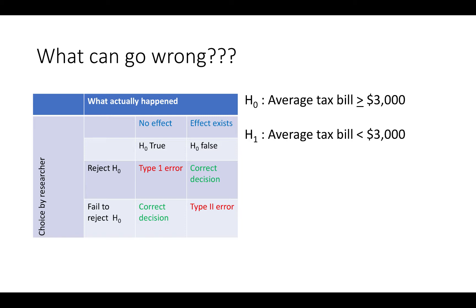We're going to take a look at a town official who claims that the average tax bill in their town is less than $3,000 a year in property taxes. That is the official's claim or alternative hypothesis. The null hypothesis, therefore, is the opposite of that, that the average tax bill is greater than or equal to $3,000.